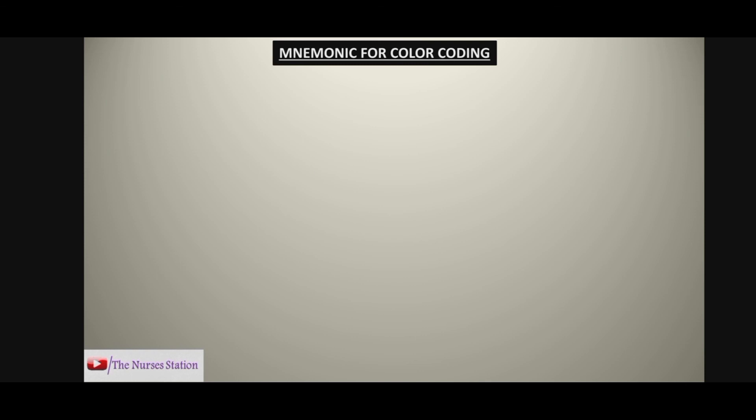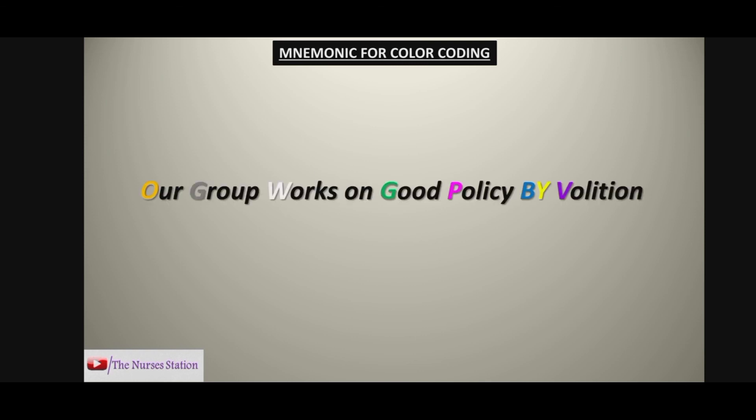The mnemonic for remembering the order of the color coding is: 'R group works on good policy by volition,' where O stands for orange, G for gray, W for white, G for green, P for pink, B for blue, Y for yellow, and V for violet.